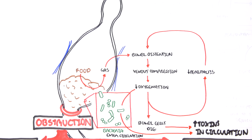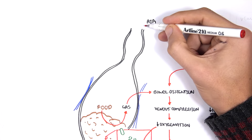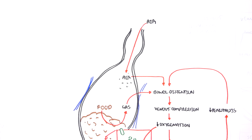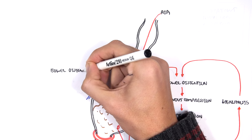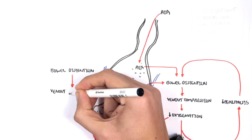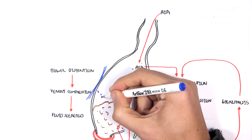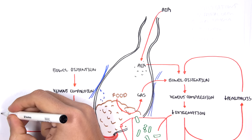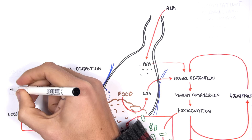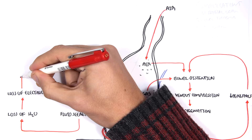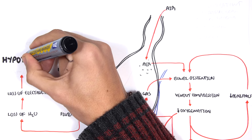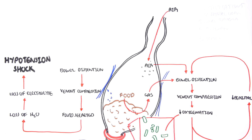When we breathe, air goes into the intestine normally, but this aggravates the bowel distension further. The continued bowel distension compresses vessels, and venous compression causes fluid to be secreted into the bowel. When fluid is secreted into the bowel, we lose water, and when we lose water we lose electrolytes. Loss of electrolytes and water results in hypotension — we get shock.